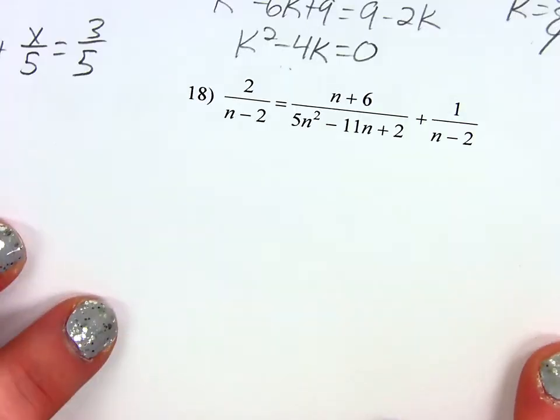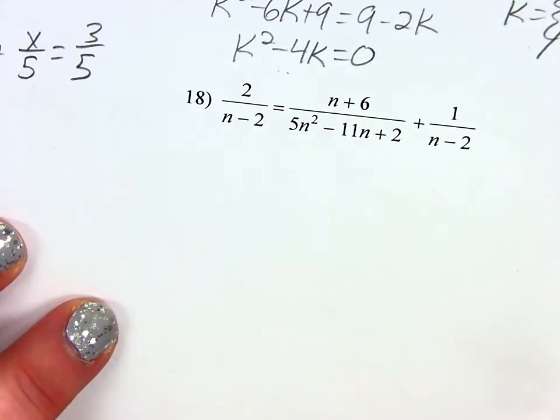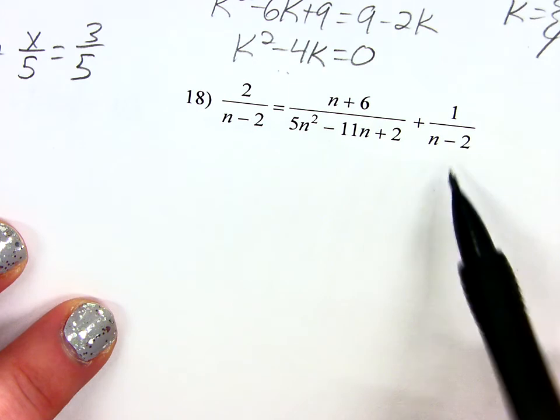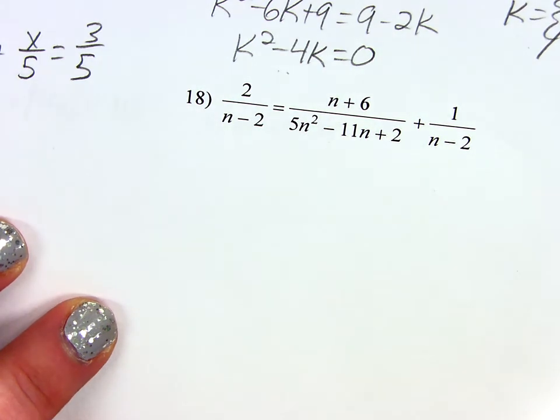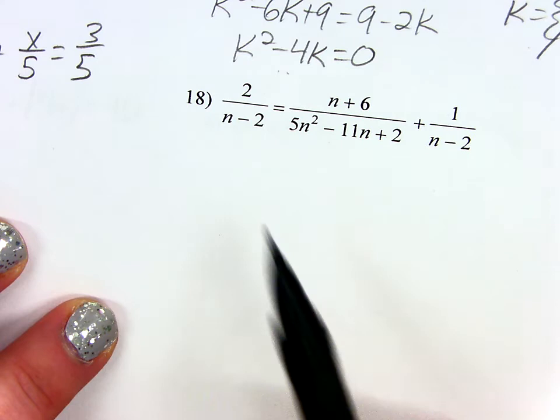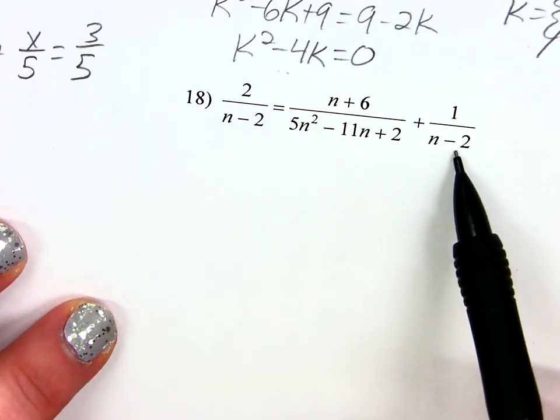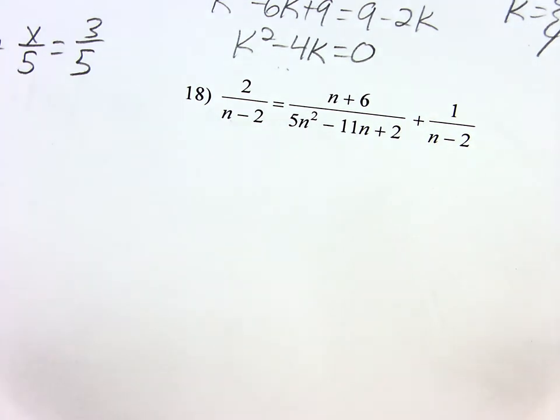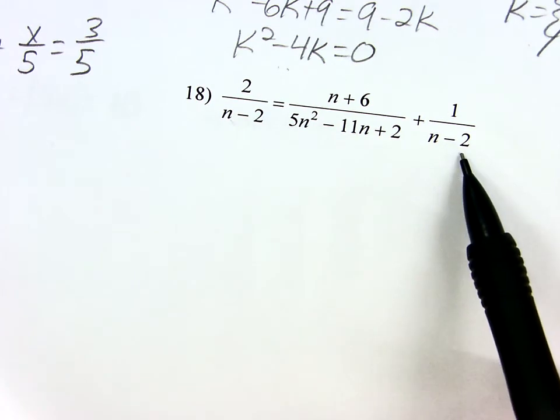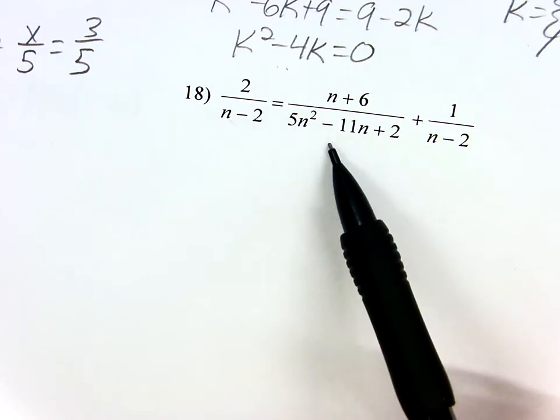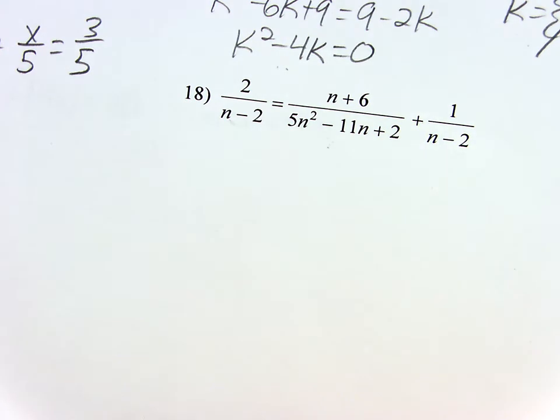So if I look at 18, if I had gotten 0 as an answer, it would actually be fine. It wouldn't turn any of these denominators into 0. But what would? 2. So positive 2 would be an excluded value because it would turn both of these denominators into 0. It only has to turn one denominator into a 0 because I can't have it anywhere. And I'm sure there's probably two values here that would turn that into a 0 also. Those would be excluded values also.